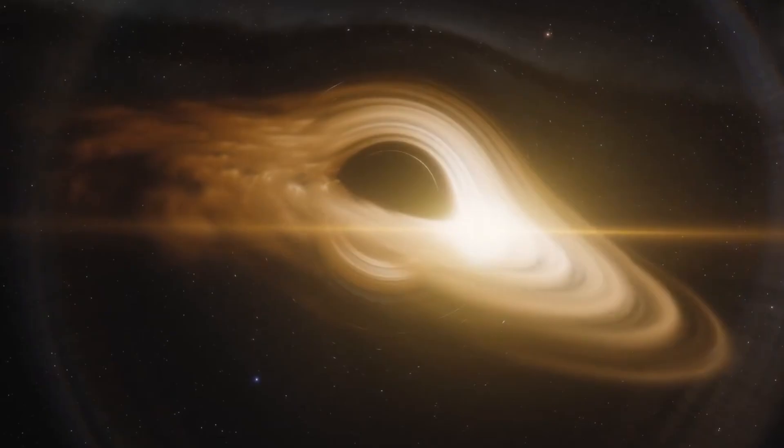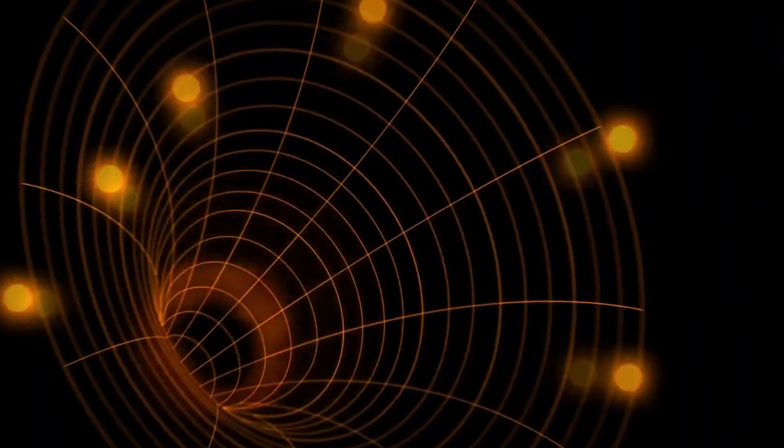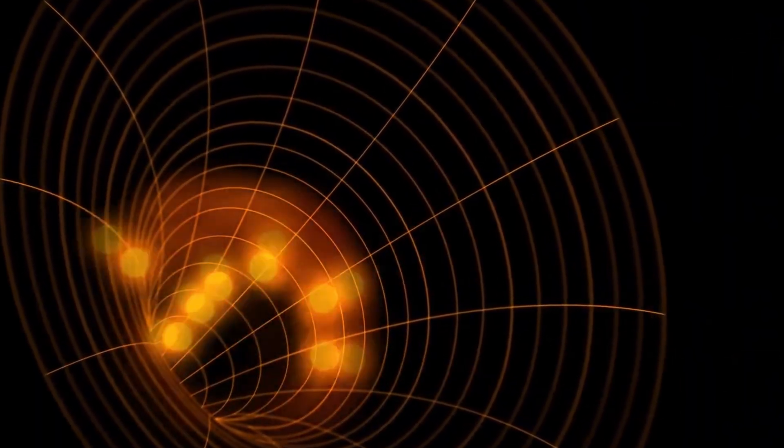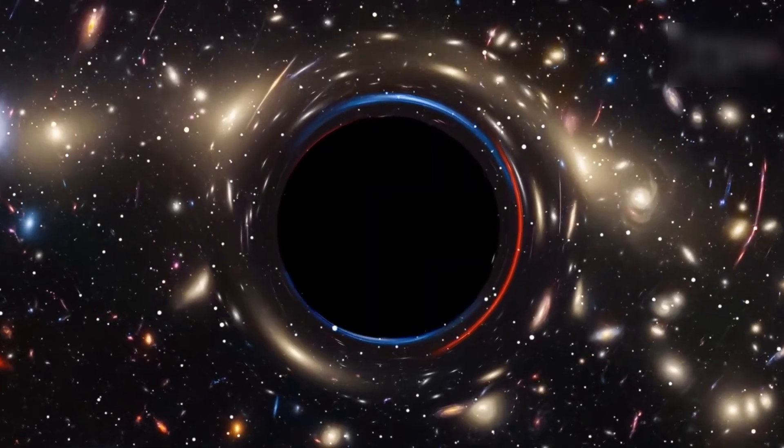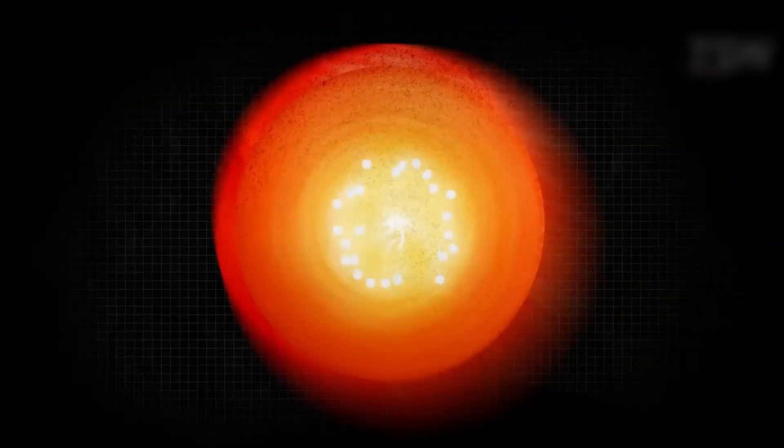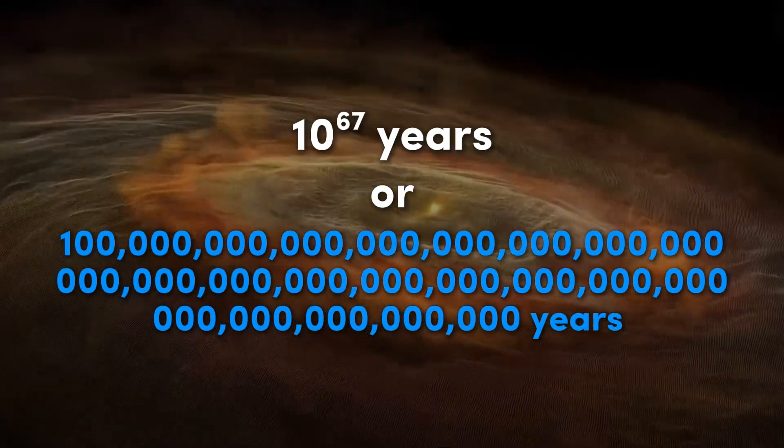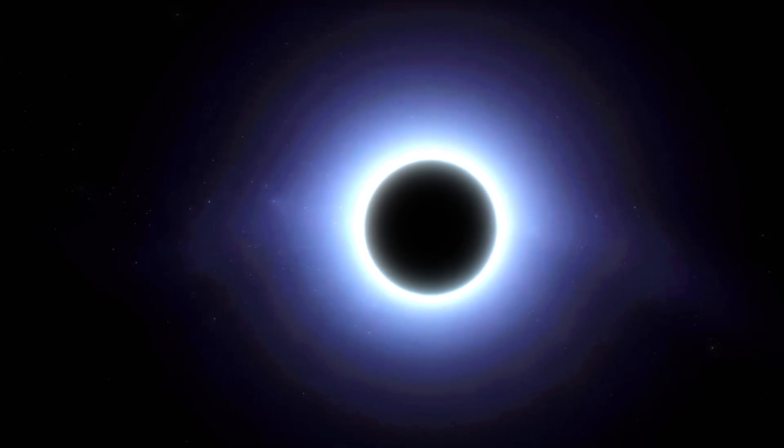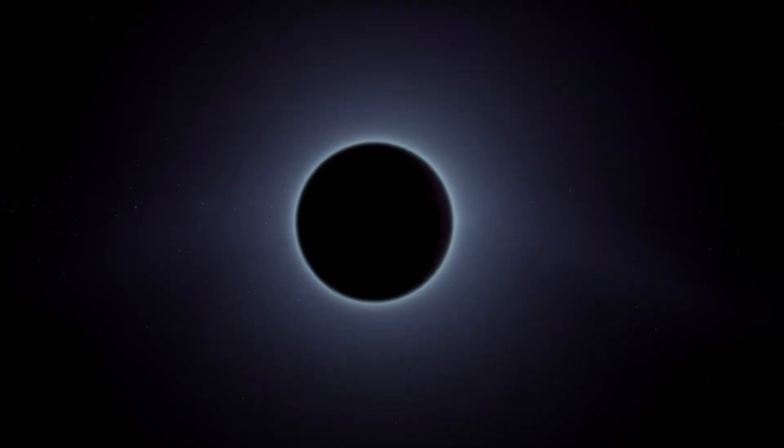Pairs of particles constantly pop in and out of existence. Sometimes one particle falls in while the other escapes, stealing a tiny bit of the black hole's energy. Over unimaginable timescales, this process causes the black hole to evaporate. A stellar black hole might take 10 to the 67th years to fully vanish. Far, far longer than the current age of the universe. But when it finally reaches the end, the show is explosive.